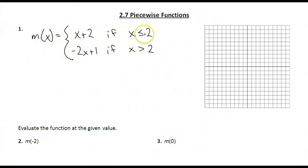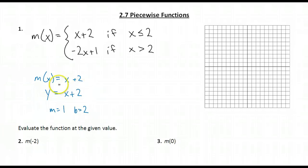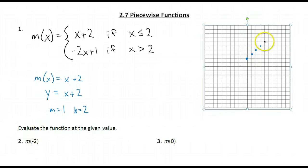To graph this piecewise function, we're going to start by looking at the equation x plus 2. So the first part of m of x is when m of x equals x plus 2. m of x equaling x plus 2 is really just y equals x plus 2, which is a line in slope-intercept form where the slope is 1 and the y-intercept is 2. So I'm going to start by graphing this line — I have a y-intercept of 2, and from that point a slope of 1, which is up 1 and to the right 1. I'm going to make dots all the way across my graph — I can go up 1 and to the right 1, or also down 1 and to the left 1, to get a positive slope.